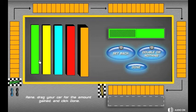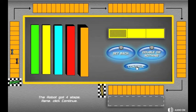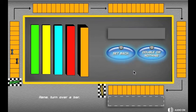The player turns over a bar and drags the race car for the shaded amount of the bar and clicks done. The robot's car will move automatically. The race cars continue around the track of five bars to the finish. There are options of setback and double or nothing that involve probability.